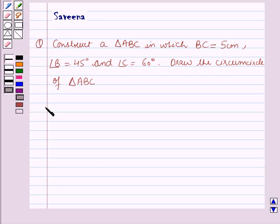And now we will start with the solution. First of all we will draw a rough figure, a rough diagram of triangle ABC where angle B equals 45 degrees, angle C equals 60 degrees, and BC equals 5 cm.